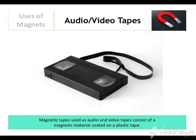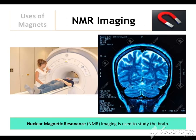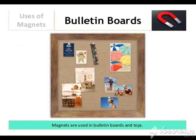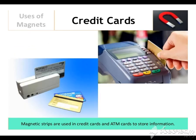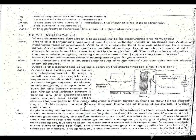Electromagnets and magnets are used in many ways in our life. Audio and video tapes use them, as do computer hard disks. They are used to treat patients. Built-in boards and credit cards use magnets to sort information and enable payments. Scrap magnets are also used here.